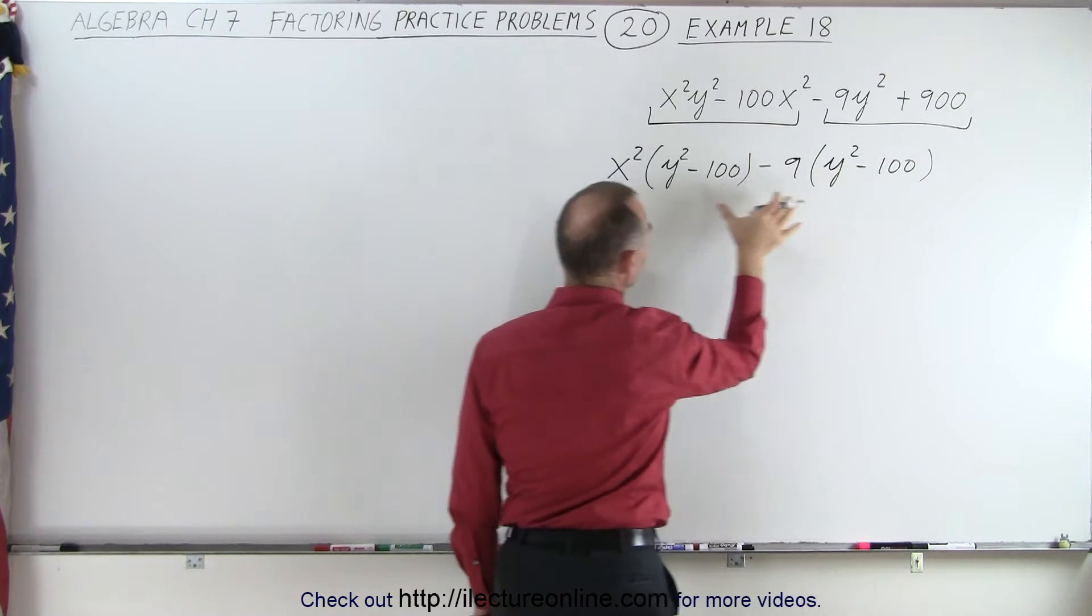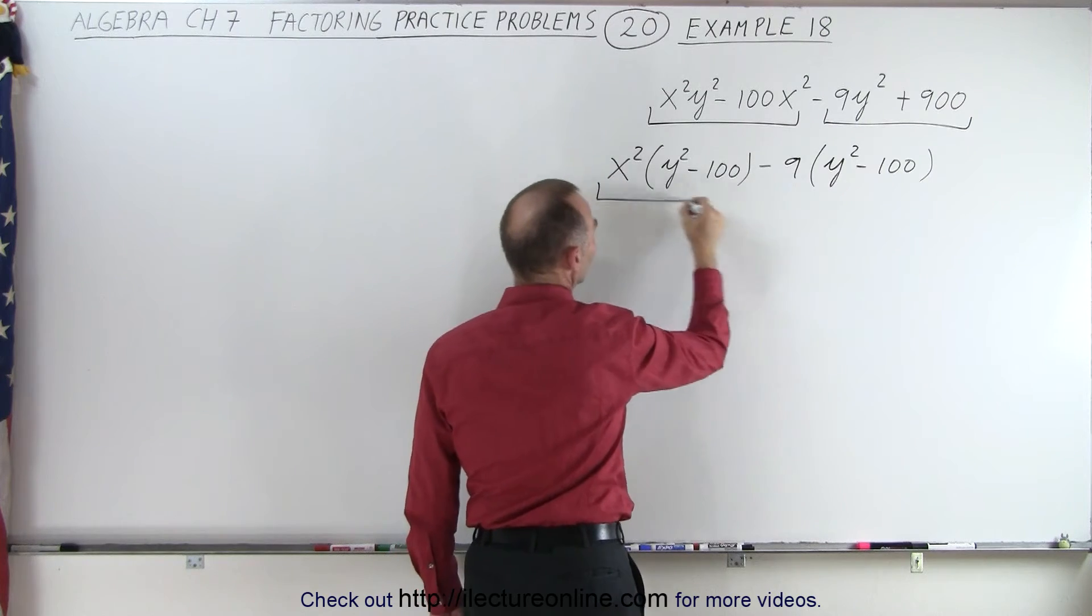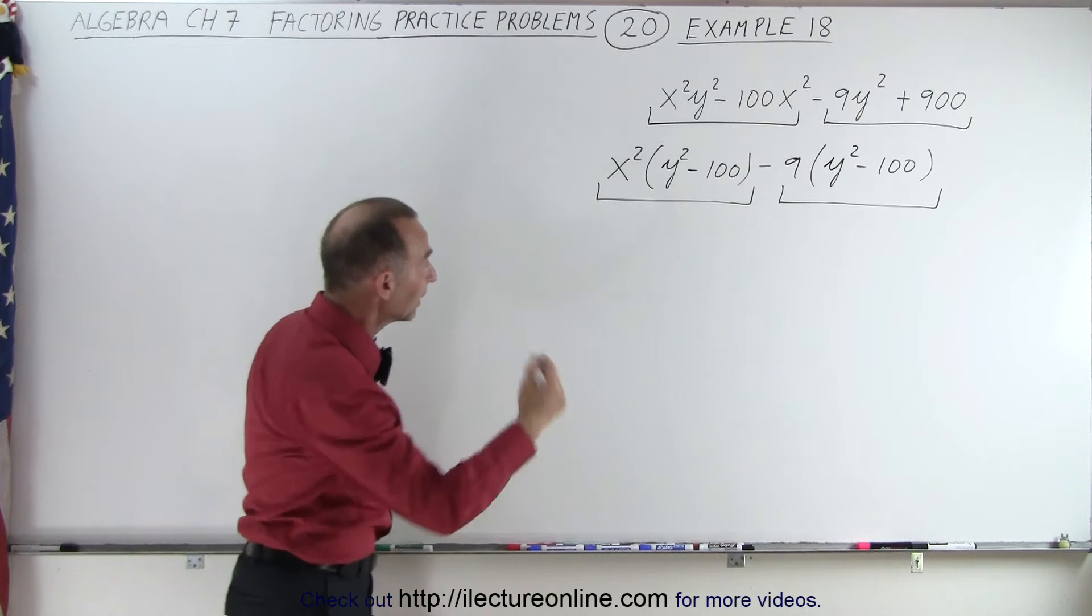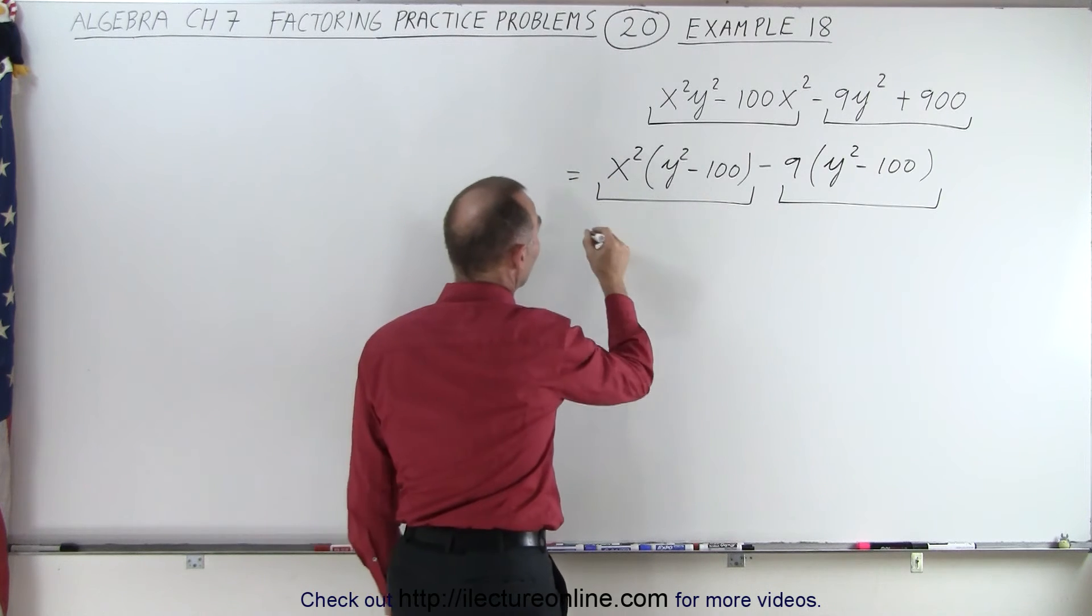And sure enough, notice this is exactly the same as this. We now have two terms that each contain the quantity y squared minus 100. We can then factor that out and see what happens.